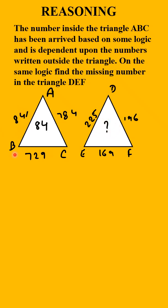So 841, 729, and 784, these are all perfect square numbers, isn't it?